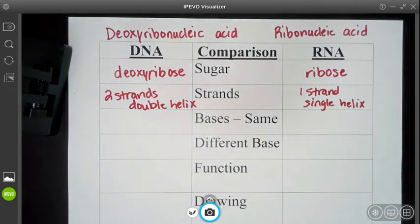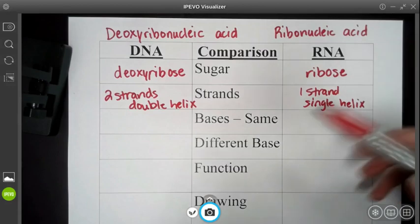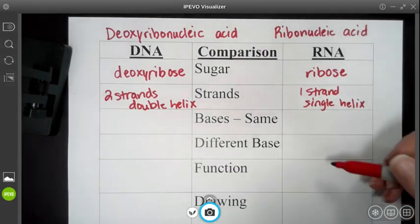Bases. Nitrogen bases are found in DNA. There's adenine, thymine, guanine, cytosine, and uracil. Now three of these bases are found in both DNA and RNA, which I'll talk about on my next paper.